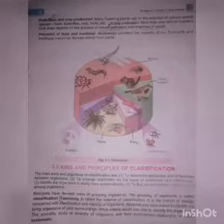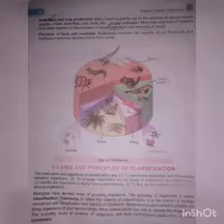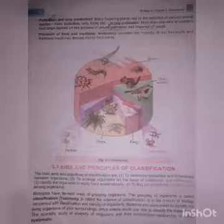Section 3.2 covers the aims and principles of classification. Why is there a need for classification? The main aim and objective of classification is to determine the similarities and differences between species and organisms.